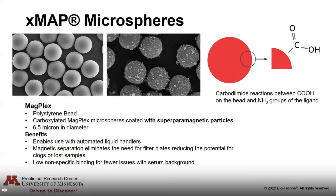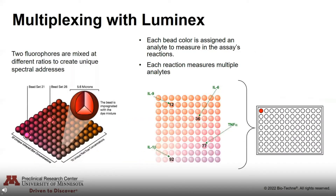xMAP works using microspheres — small beads coated with magnetic particles that have multiple binding sites, allowing detection of multiple analytes. The magnetic particles allow magnetic separation, which eliminates the need for filter plates or complicated washing steps — you simply use a magnet to draw the beads to the bottom and remove the wash buffer. With the Luminex multiplex assays, two fluorophores are mixed at different ratios to create unique spectral addresses. Each bead color is assigned an analyte to measure, and each reaction measures multiple analytes in one sample.